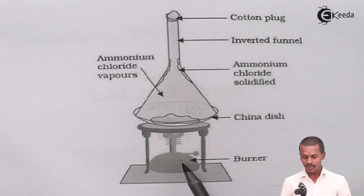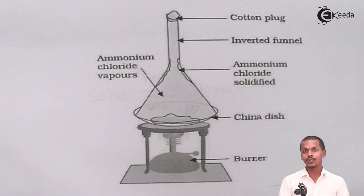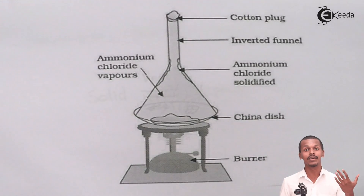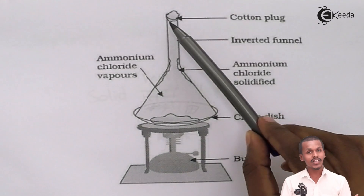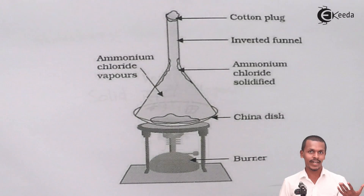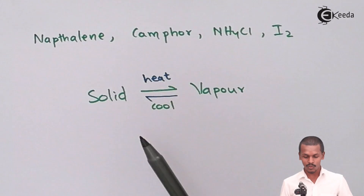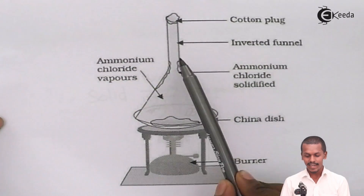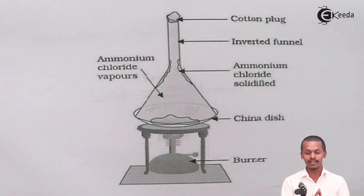When we heat the mixture, because ammonium chloride (NH4Cl) has the capacity to sublime, it directly converts into a vapor phase without forming a liquid phase. Since the cotton plug prevents the vapor from escaping, the vapor rises but encounters a cooler region higher up in the funnel. Because of this cooling, the solid deposits appear on the inner surface of the funnel.